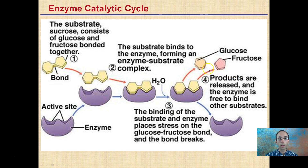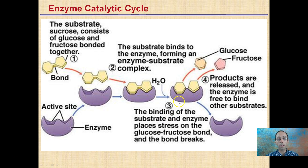To walk through the general catalytic cycle: we have our active site with our enzyme. Sucrose — which consists of glucose and fructose bonded together as a disaccharide — binds to an enzyme with a very specific shape for sucrose, forming an enzyme-substrate complex. The enzyme then places stress on the glucose-fructose bond of that sucrose molecule, ultimately breaking the bond. The products — glucose and fructose — are released, and the enzyme is now free to bind to another sucrose molecule and repeat the process.